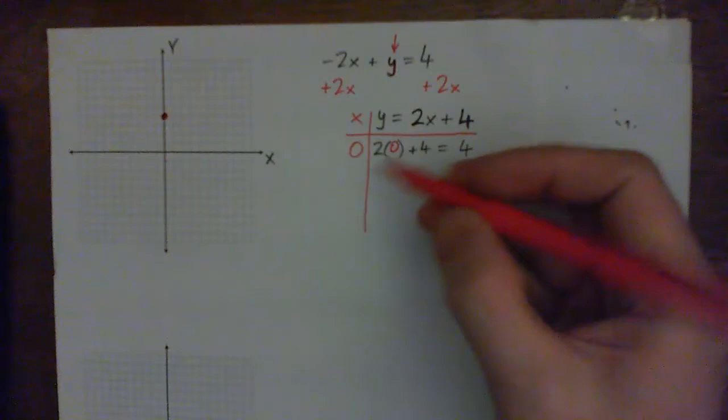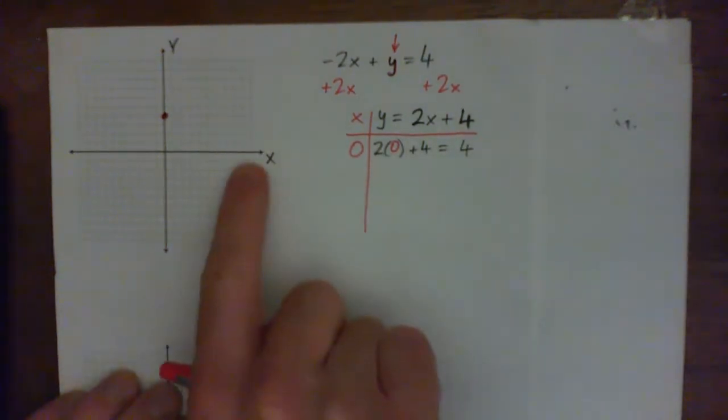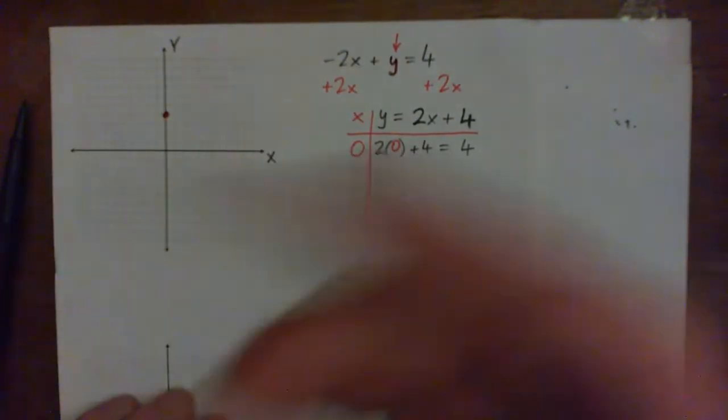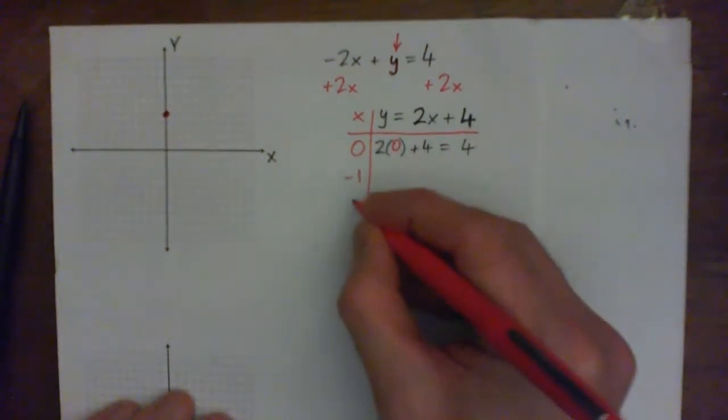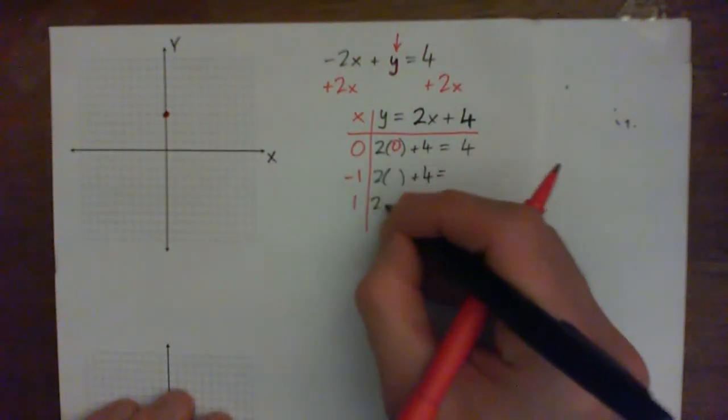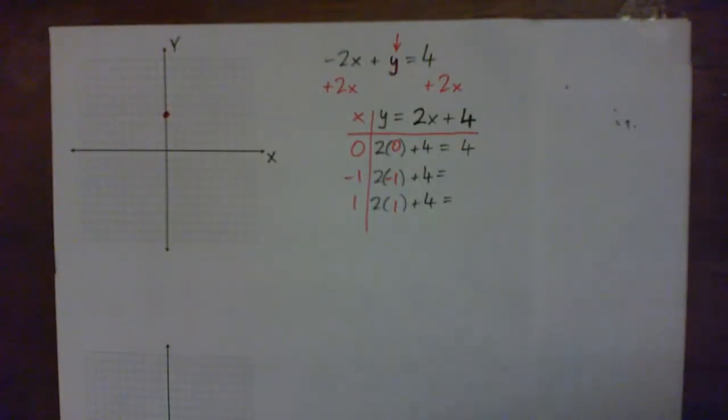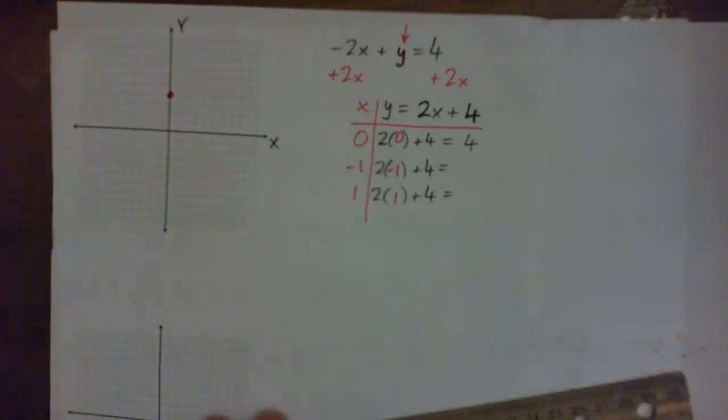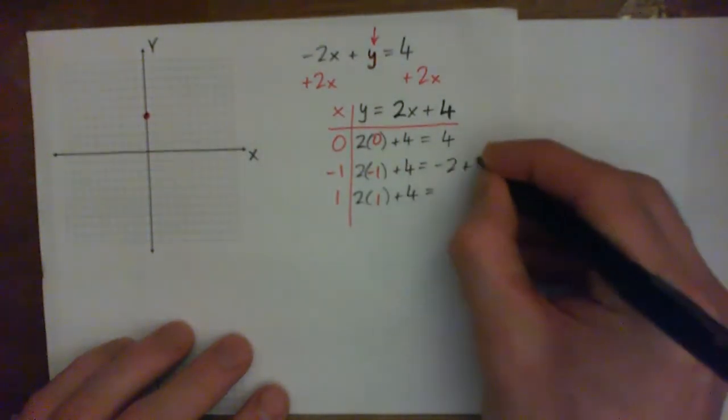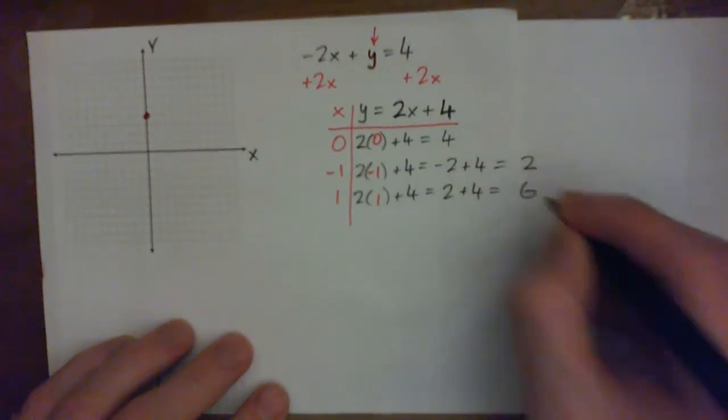So you can pick anything. You could do negative 1 and 1, negative 2 and 2, or you could do 5 and 10. You wouldn't want to do 100 because it's all the way over there and not on your graph. So it'd be good to pick something that's going to show up on the grid. But I'll just plug in negative 1 and 1. When I plug in the x values, it's good to use parentheses. So 2 times negative 1, I get negative 2 plus 4, which is 2. And then we have 2 plus 4, which is 6.